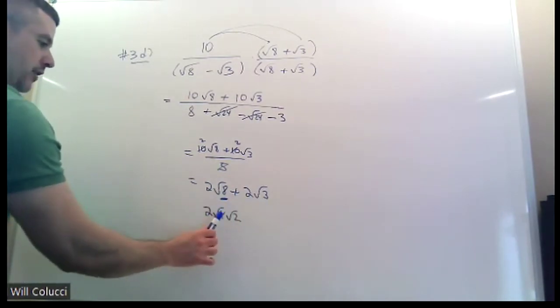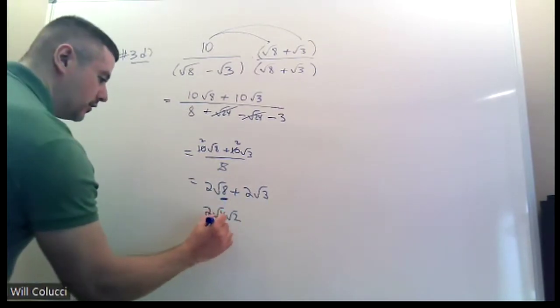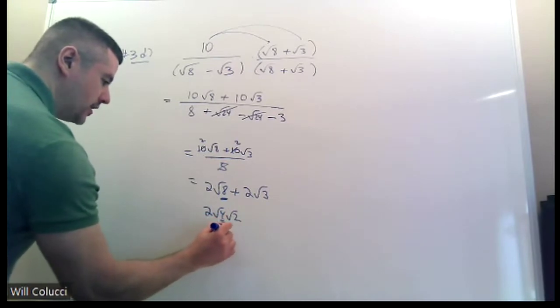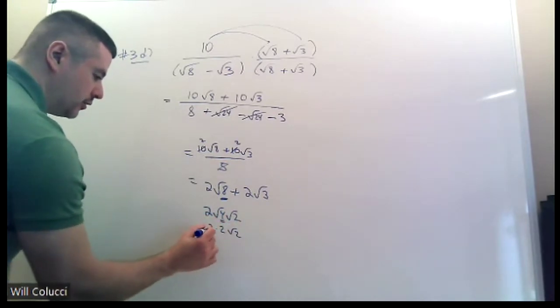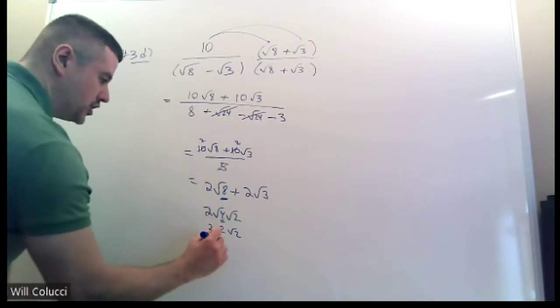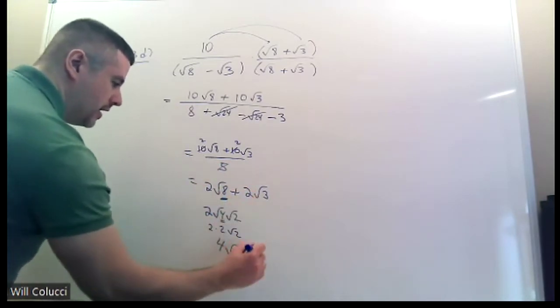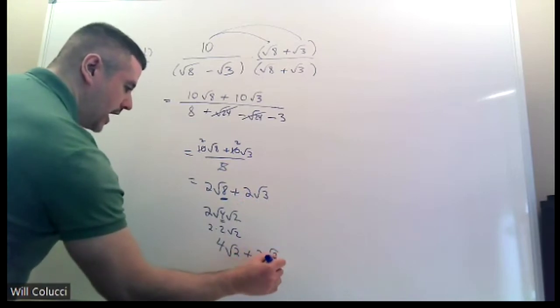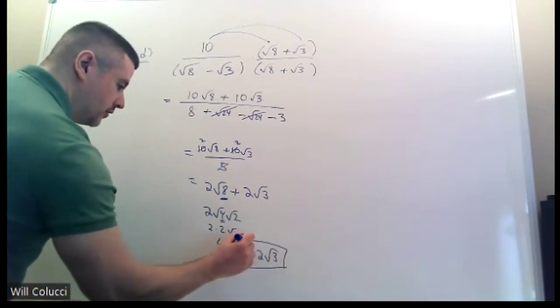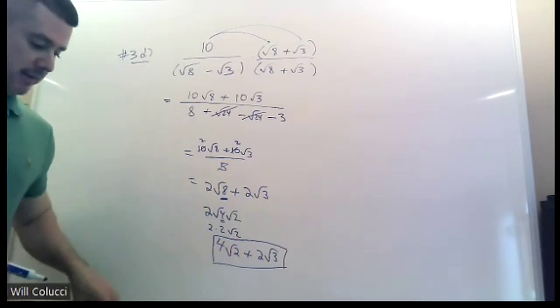3 doesn't break down, but 8 does. 8 is radical 4 times radical 2. Take the 4 out of jail. A lot of 2 is here, so be careful. 2 times 2 are out of the jail. That's 4. Radical 2 goes along for the ride. And don't forget about your buddy 2 radical 3 there. So it was very tricky because of that radical 8.